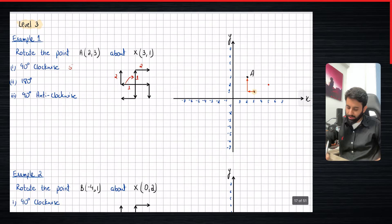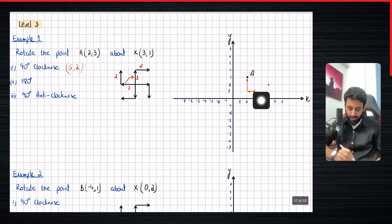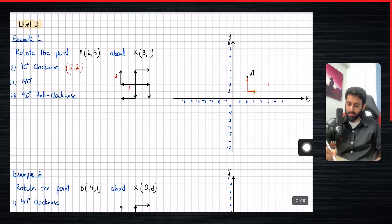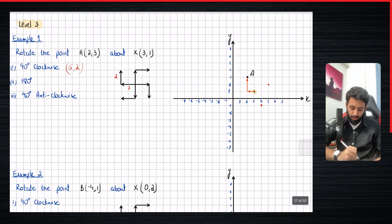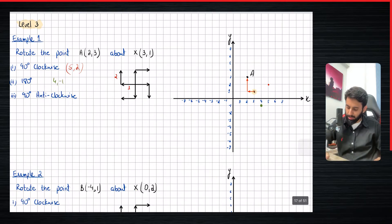So the rotated point has coordinates five comma two, and then 180 degrees. So again, for 180 degrees, like I said, I'm not even going to recommend that you use the arrow. Just change the whole, just turn it in the opposite direction. So for example, this is one unit left. So now it's going to be one unit to the right. And previously, it was two units up. So that means now it's going to be two units down. So from the center, one to the right and two down takes us over here. Let's use a different color for this. So that's going to be four and minus one. So four comma minus one.